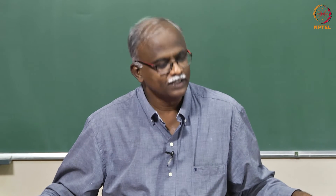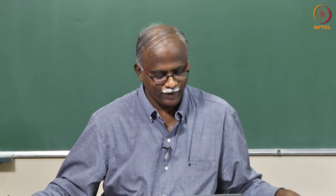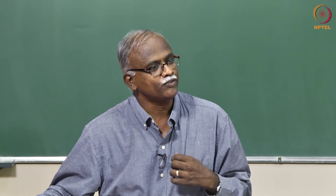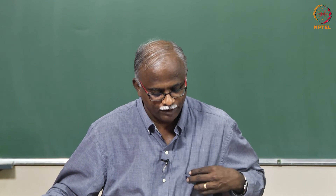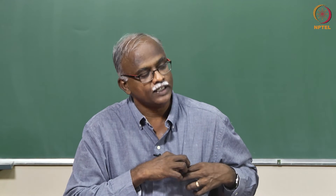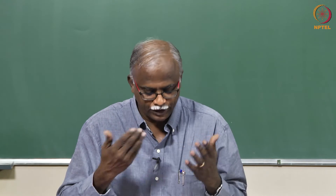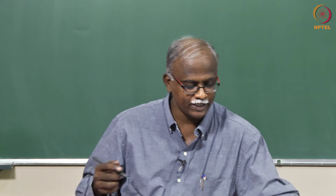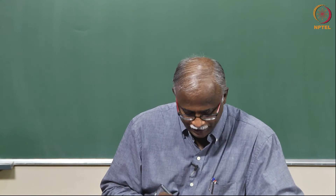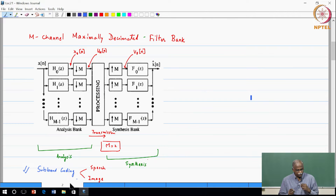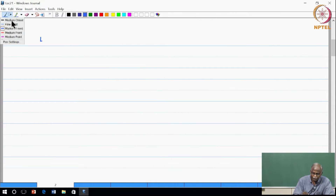Good morning. Let us begin with a quick summary of lecture 20 and move into the main topic of today's lecture, which will be the 2-channel filter bank. We will look at the complete development in context of the mathematical analysis, intuition as to what happens when aliasing occurs, where it occurs, and the forms in which aliasing takes place. So, lecture 20 review — just 2 key points I wanted to highlight.